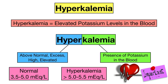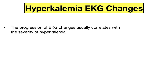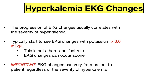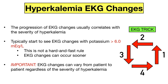Let's look at those changes now along with a simple way to remember them. The progression of EKG changes seen with hyperkalemia usually correlates with the severity of the potassium level. Generally speaking, the first EKG changes start to occur when potassium levels are greater than 6. However, this is not a hard and fast rule, and EKG changes can happen sooner. The biggest takeaway is that the effects of high potassium on the heart can vary patient to patient. There is a general progression of EKG changes, and the trick to remember them is to draw a counterclockwise box of arrows like the one shown.